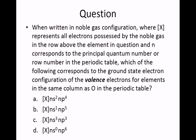which of the following corresponds to the ground state electron configuration of the valence electrons for elements in the same column as O in the periodic table?